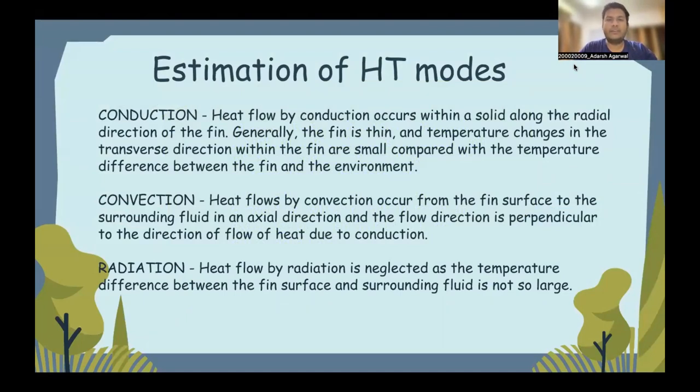Here we will be looking at estimates of different heat transfer modes. The first is conduction. Heat flow by conduction occurs within a solid along the radial direction of the fin. Here the fin is assumed to be really thin and that's why any variations in the temperature along the thickness of the fin will be neglected and assumed to be constant. The second is convection. Heat flows by convection occurs from the fin surface to the surrounding fluid in the axial direction. Heat flow by convection is perpendicular to the heat flow by conduction. In this case, the surrounding fluid is assumed to be fast moving air. The third form is radiation. Heat flow by radiation is neglected as the temperature difference between the fin surface and the surrounding fluid is not so large.